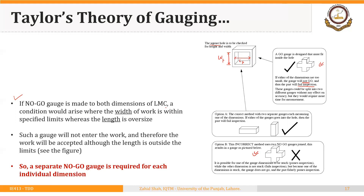If the no-go gauge is made to both dimensions at LMC, a condition may arise where the width of the work is within specified limits while the length is oversized. Such a gauge will not enter the work and therefore the work will be accepted, although the length is outside the limits. Similarly, if the length is within limits but the width is greater than the upper limit, the no-go gauge will also not enter, and you will assume the part is within limits — but it will not be.